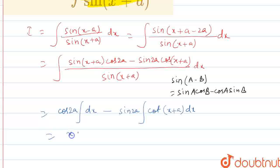Here we have x·cos(2a) minus sin(2a), the integral of cot(x + a) is ln(sin(x + a)) plus constant c. So, this one is the integral.